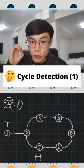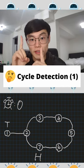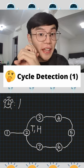Set time back to zero, tortoise at the beginning, hare at where they met. Both tortoise and hare will take one step at a time. The place where they meet will be the entrance of the cycle.